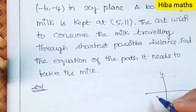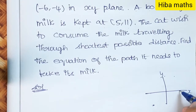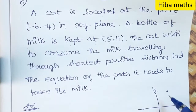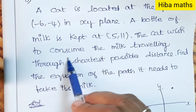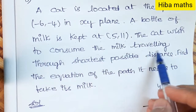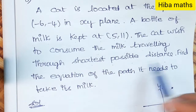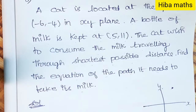The cat is at the point (-6, -4) and the milk is at (5, 11). x is 5, y is 11. The cat wished to consume the milk traveling through the shortest possible distance. Find the equation of the path it needs to take to get its milk.